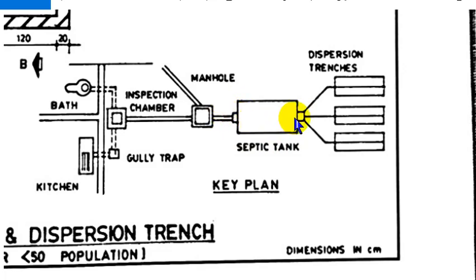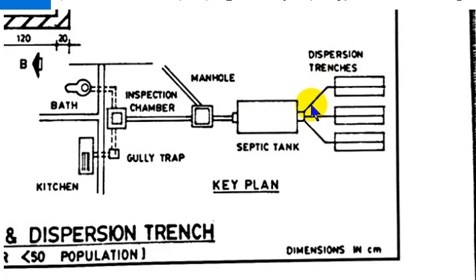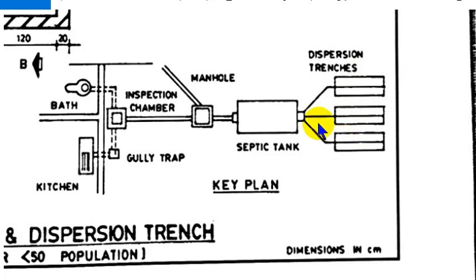This is an outlet. This is a treatment zone. There are water mats. This is a dispersion trench. There are three trenches arranged in the water.